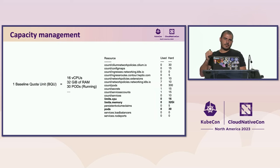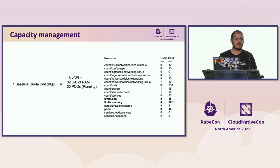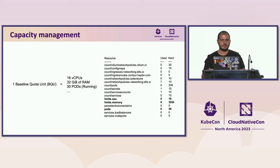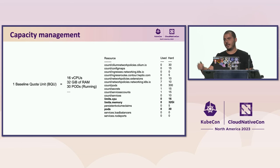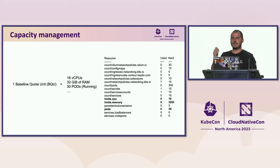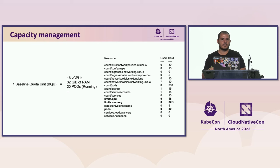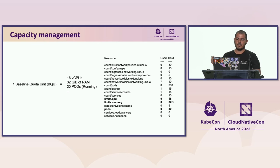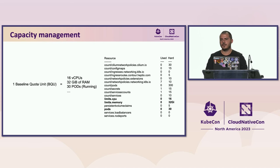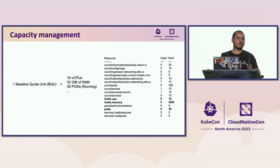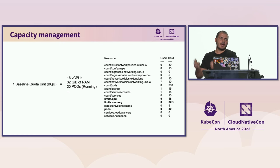At the namespace level, to simplify quota management operations, we introduce the concept of baseline quota unit, or BQ. A BQ is a quota definition and every namespace quota increase is achieved by multiplying each of the BQ items. For example, if you want to allocate 32 virtual CPUs instead of 16, you simply increase the namespace quota from one to two BQs, and all other BQ items — such as the available pod count — are multiplied as well. This approach simplifies operations for both tenant owners and cluster administrators.